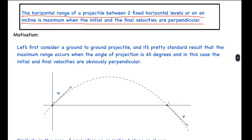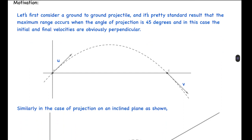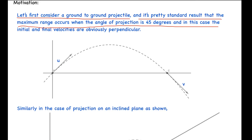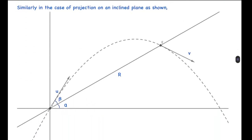Let's talk about the motivation behind this idea. First, consider the ground-to-ground projectile — it's a pretty standard result that maximum range occurs when the angle of projection is 45 degrees, and in this case the initial and final velocities are obviously perpendicular. Similarly, in projectile motion on an incline, when we project the ball at some angle beta with the inclined plane, for maximum range beta equals half of (90 minus alpha), meaning it should be projected along the angle bisector of that angle.